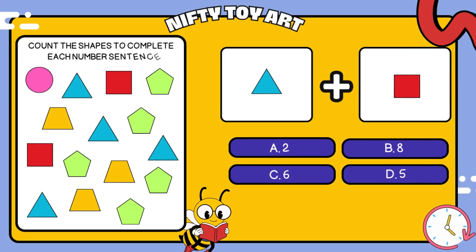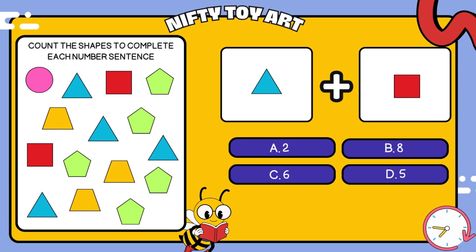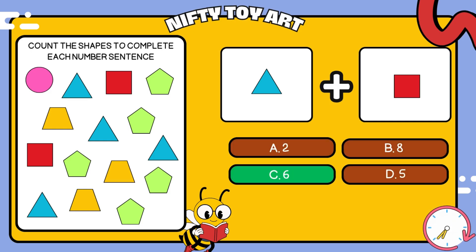I have a triangle plus square. How many all together? That's right, six.